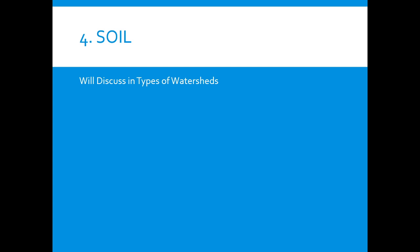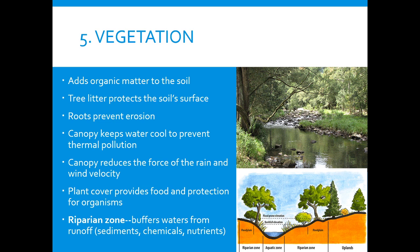We will talk about soil when we get to the types of watersheds. Vegetation is another factor — it adds organic material to the soil. This can really affect a watershed because the more vegetation, the more water is stopped in its erosion. Roots can prevent erosion; a canopy can keep the water cool, which prevents evaporation. It can also reduce the force of the rain and the velocity of the wind. Plant cover can protect organisms and provide food. As we learned on our field trips, riparian zones are buffers — these buffer the waters from runoff. Riparian zones are the areas right next to the water that usually have different types of plants, and these plants help to prevent erosion.